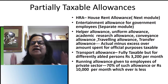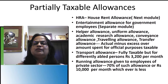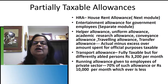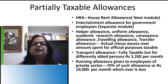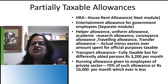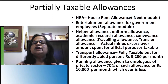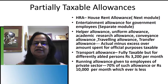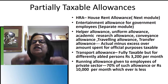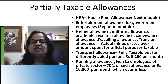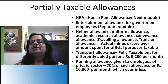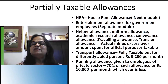Next are partially taxable allowances. For these, the rule is: actual amount received minus whatever was actually spent. If any amount remains unspent, it is taxable. For example, if uniform allowance received is Rs. 15,000 and only Rs. 10,000 was spent, the remaining Rs. 5,000 is taxable. If the full Rs. 15,000 was spent, the excess is zero and no tax is payable.